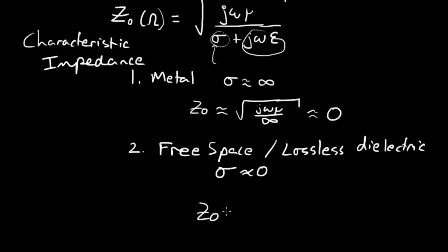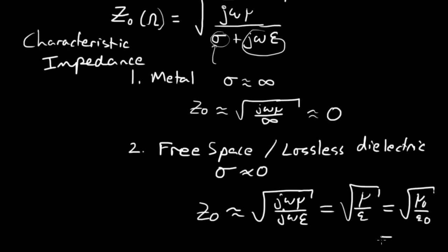Maybe you have some water in the air or something. But if you're out in space, more or less the conductivity is going to be zero. In that case, Z naught is approximately equal to j omega mu over j omega epsilon. And what that just simplifies down to is the square root of mu over epsilon, which for free space is equal to mu naught over epsilon naught, which if you ran the numbers would equal 377 ohms.